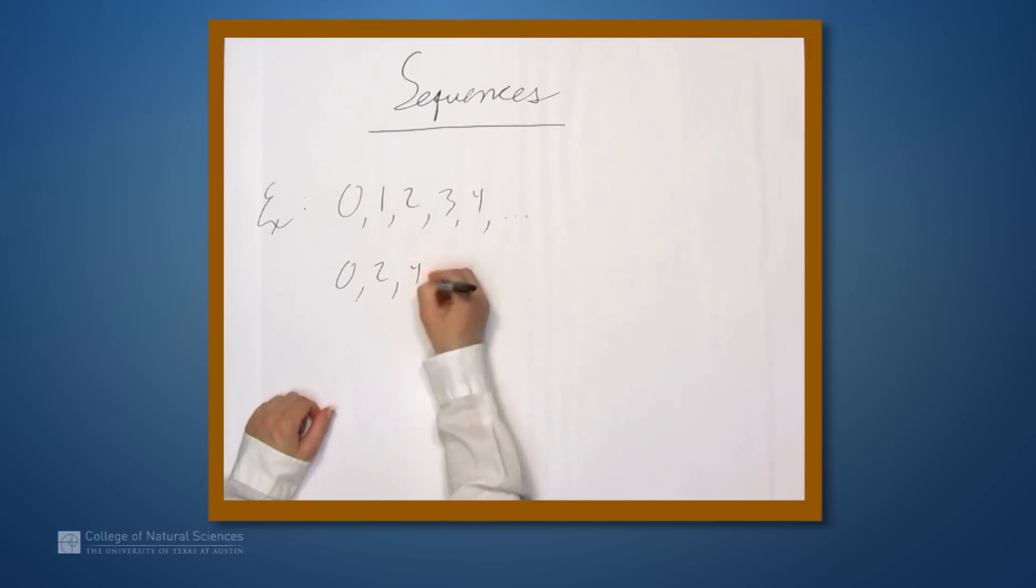Maybe just the even numbers, this is a sequence also. Both of these can be given by nice formulas. One that can't be given by such a nice formula is this sequence, which is just formed using the digits of pi.